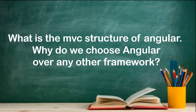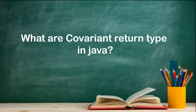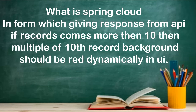Let's discuss the next questions, which are related to Java. Basically, the questions were on embedded containers in Spring Boot — what is the default embedded container, what is the benefit of it, and how can we disable it in a higher environment. What are covariant return types in Java? What is Spring Cloud? And: if an API gives a response with more than 100 records, every 10th record's background should be dynamically red in the UI. So the question is how can we do that.